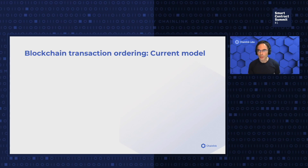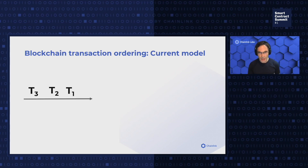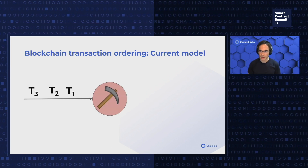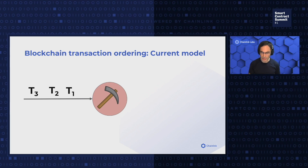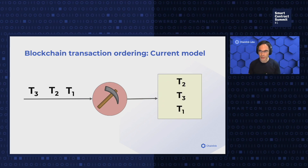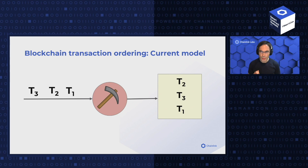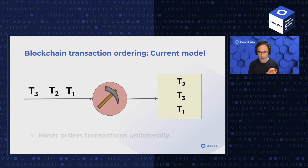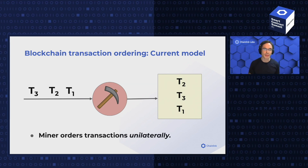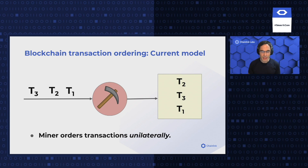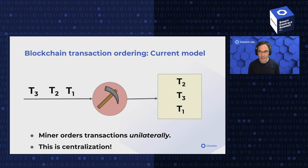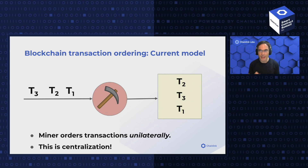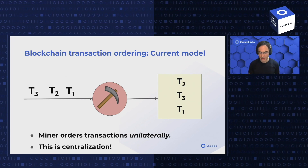How are transactions ordered today? Transactions are submitted by users to a mempool and then taken up by miners. When a miner successfully mines a block, it includes transactions in it. An important thing to know is that the miner gets to determine how the transactions are ordered in the block, and it does this unilaterally. What this means is that existing systems are centralized — centralized in a temporary and limited way, but nonetheless at least partially centralized.